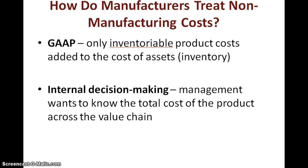To figure out selling price, they need to take into account the total cost of the product across the value chain. However, manufacturing cost is the only one treated as inventoriable product cost. Only three elements go into it: direct materials, manufacturing overhead, and direct labor. These product costs are treated as assets on the balance sheet until they are sold, at which point they are transferred to the income statement and expensed as cost of goods sold.